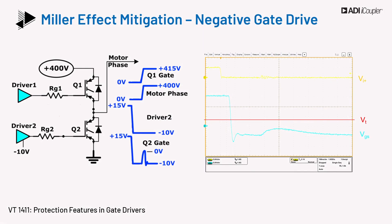Another way to mitigate the effects of Miller injection is to use a negative gate voltage. This maintains the voltage injection due to Miller capacitance below the device threshold. The figure on the right shows the gate voltage being kept below the threshold when using a negative supply, and thus, even without a separate low impedance path, we can prevent parasitic turn-on.